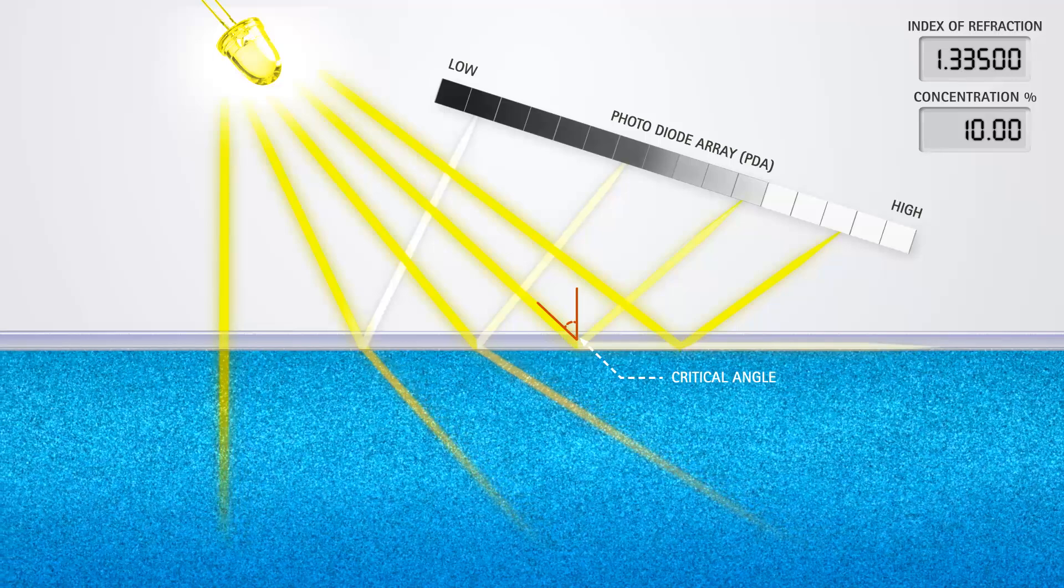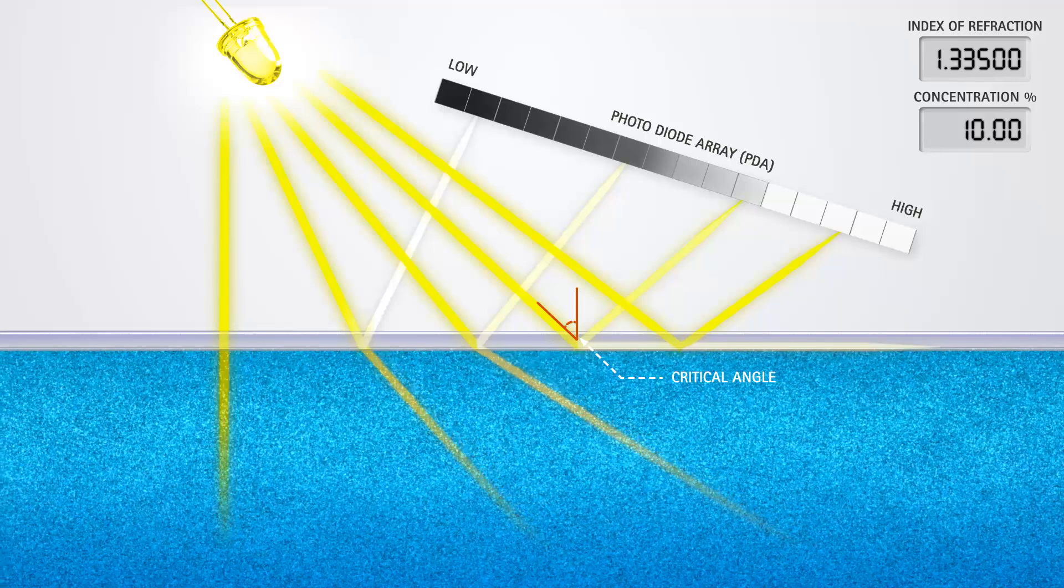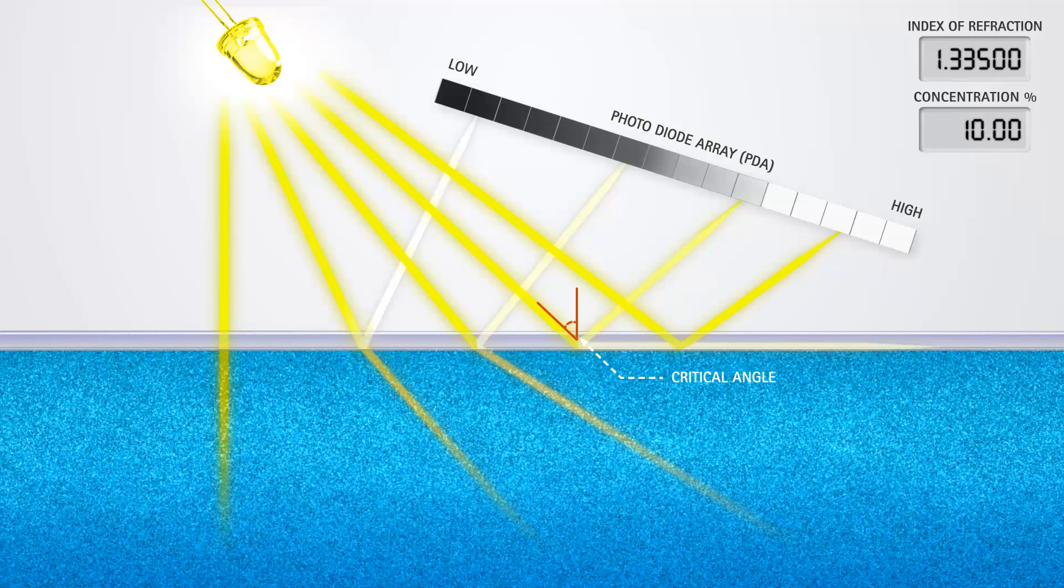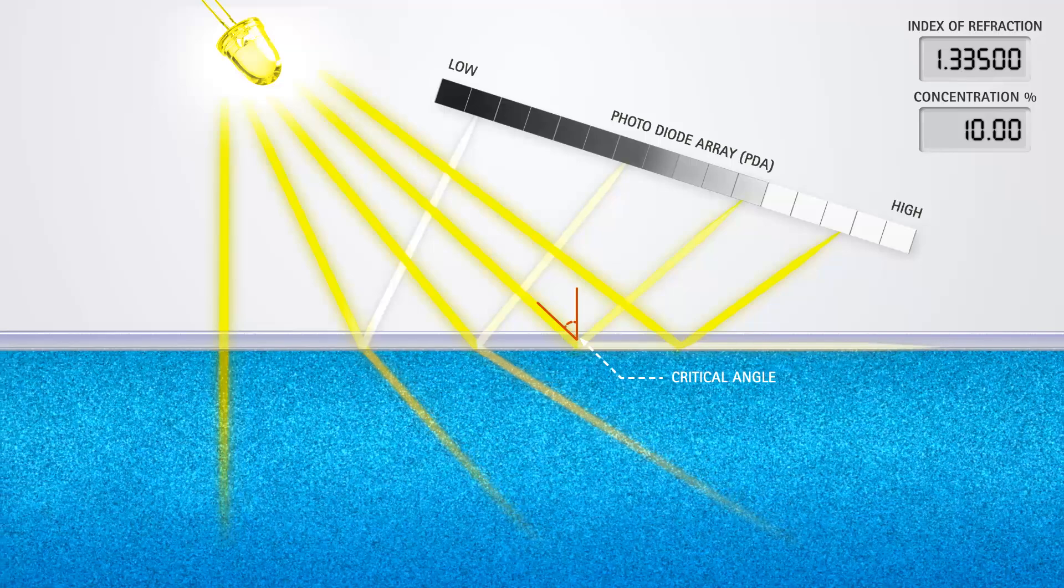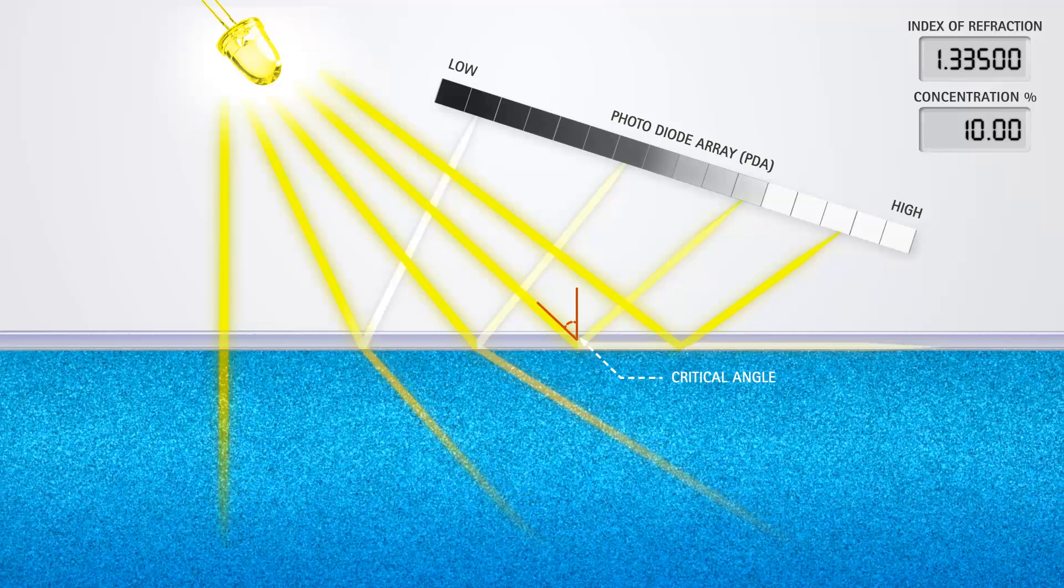Additionally, because Index of Refraction changes with fluid temperature, a thermistor monitors the temperature and the software compensates the Index of Refraction in real time.